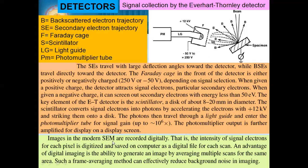The intensity of the signal electrons for each pixel is digitized and stored on the computer as a digital file for each scan. An advantage of digital imaging is the ability to generate an image by averaging multiple scans of the same area. Such a frame averaging method can effectively reduce background noise in imaging. For the same points, we can use multiple scans and try to get averaged information.